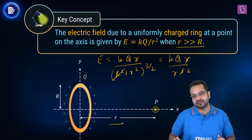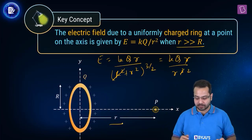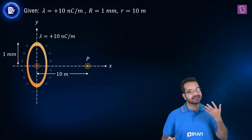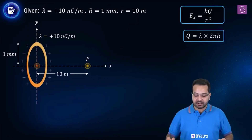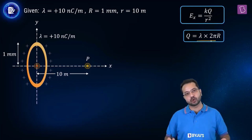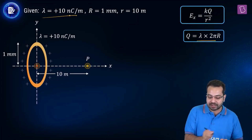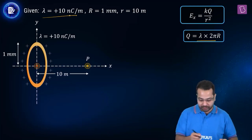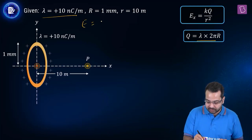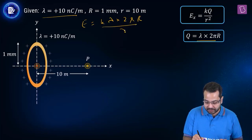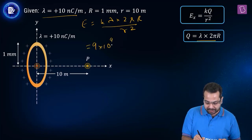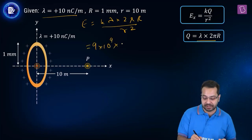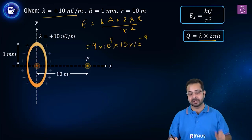If the distance is very far away, the ring behaves as a point charge. So the electric field is E = KQ/r², and Q we substitute as λ × 2πR. So E = K × λ × 2πR / r². Let's do the substitution: K = 9 × 10⁹, lambda is 10 nanocoulomb per meter, so 10 × 10⁻⁹ Coulomb in SI units.